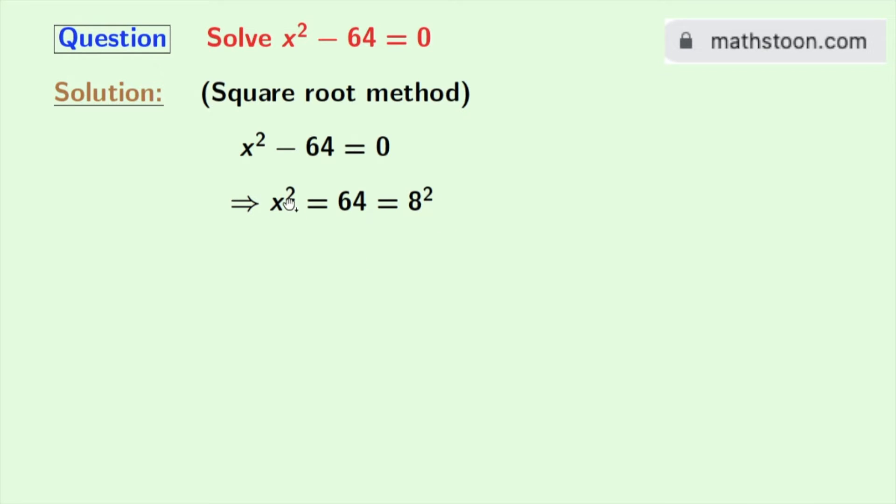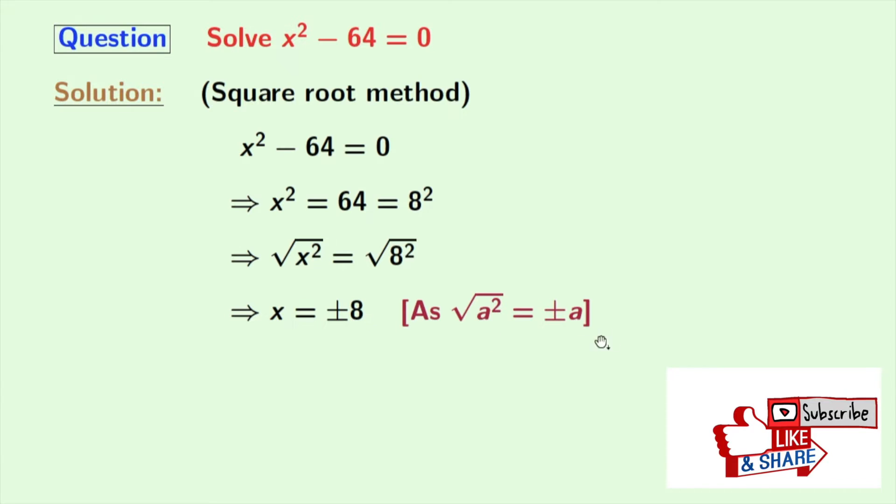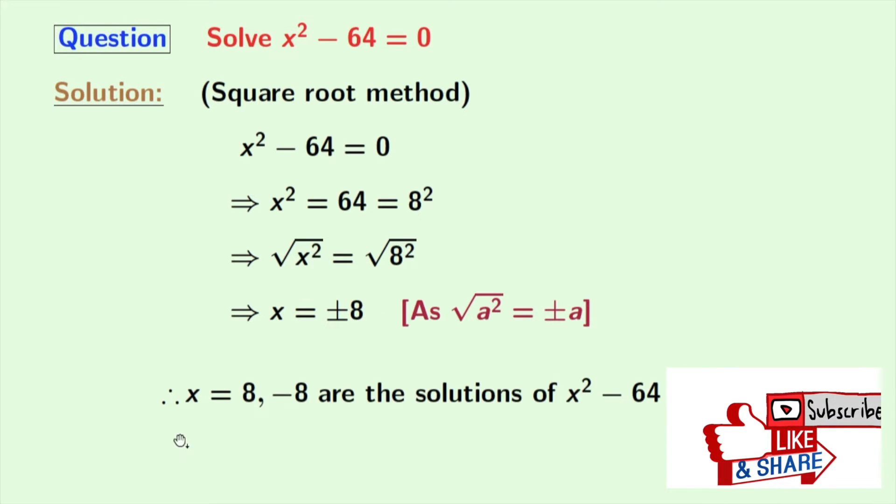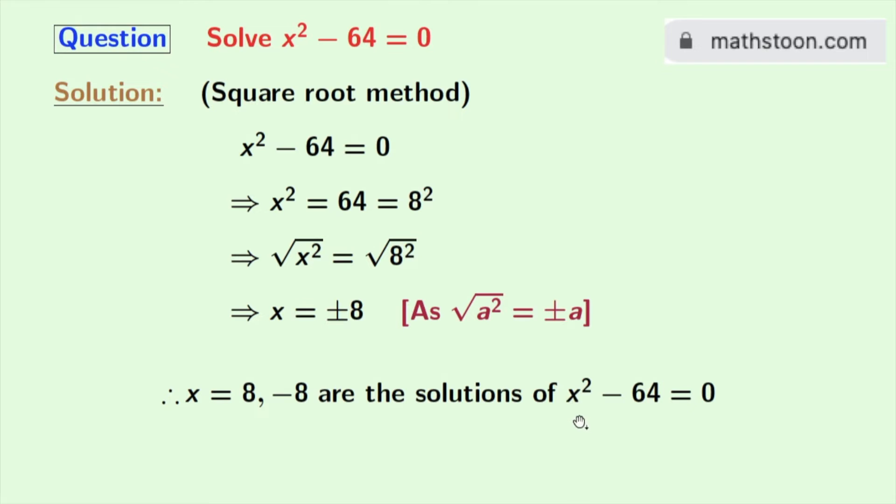Now if we take square roots on both sides we get root over x² is equal to root over 8². Solving this we get x equal to plus minus 8. As we all know that root over a² is equal to plus minus a, here a is 8. So we get x is equal to 8 and minus 8, and these are the solutions of the equation x² minus 64 is equal to 0.